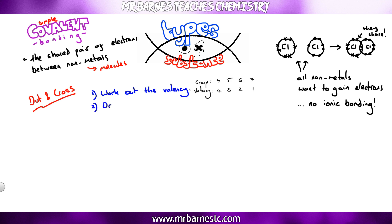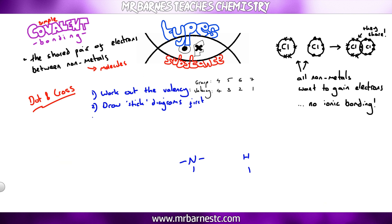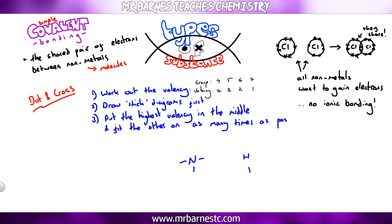Now we've got valency sorted, we need to draw stick diagrams to figure out how to put atoms together. For example, reacting nitrogen and hydrogen: nitrogen is in group five so makes three bonds, and hydrogen makes one bond. I've drawn nitrogen and hydrogen with the correct number of bonds. Step three is to put the highest valency atom in the middle — nitrogen — and put as many of the others around it as possible. Hydrogen fits onto nitrogen three times, so that gives my stick diagram for NH3.